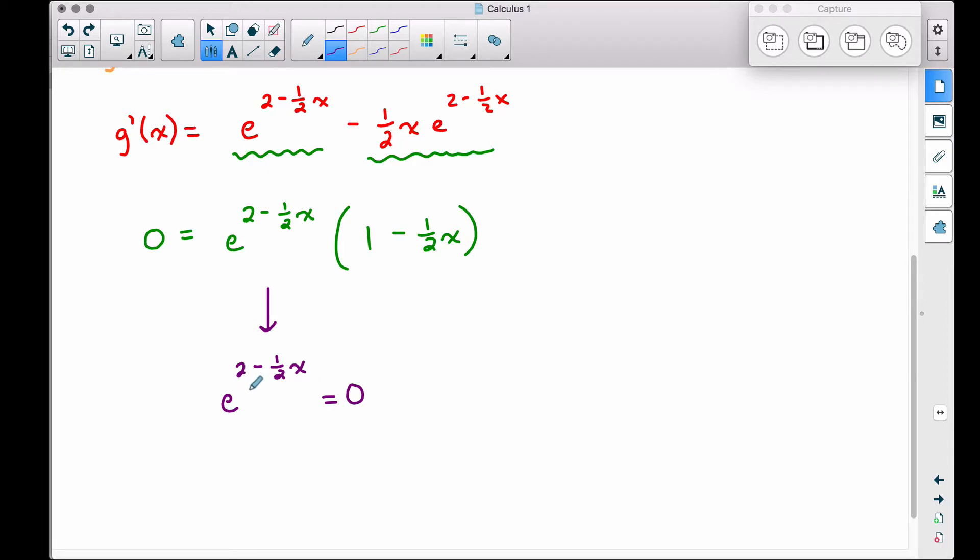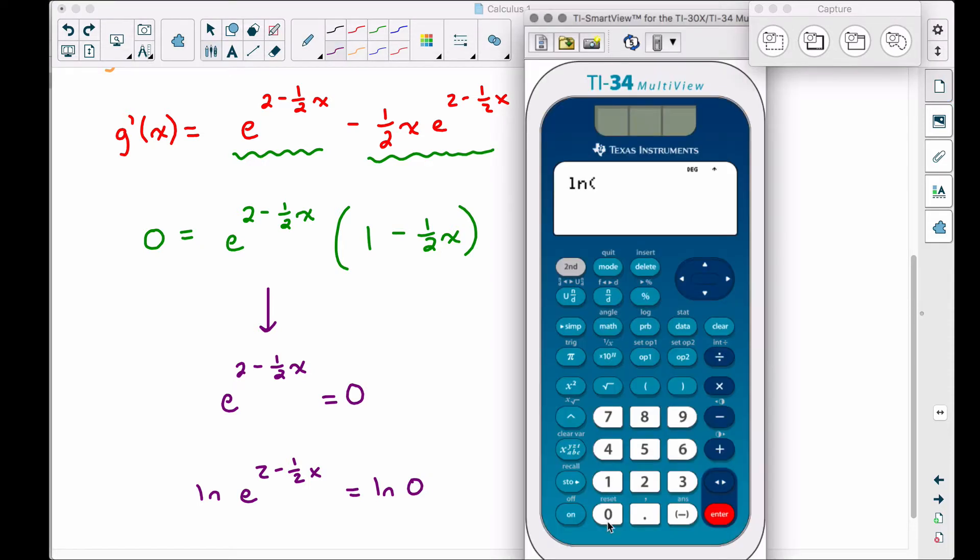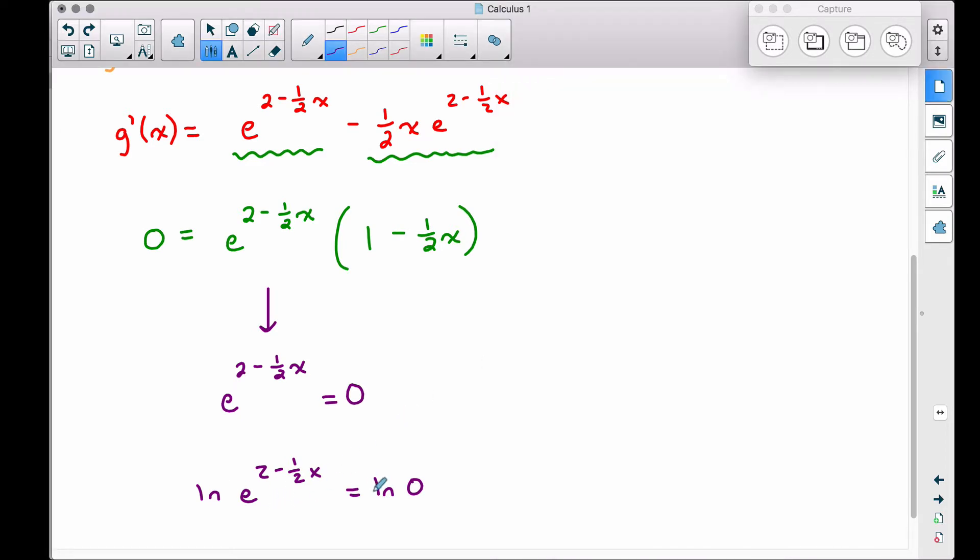because that's one of the common things you do to solve exponential equations, the natural log of zero is undefined. You can verify this in any calculator that has the natural log function on it. Natural log of zero, we get domain error. So therefore, it's impossible for e to this stuff to be equal to zero.